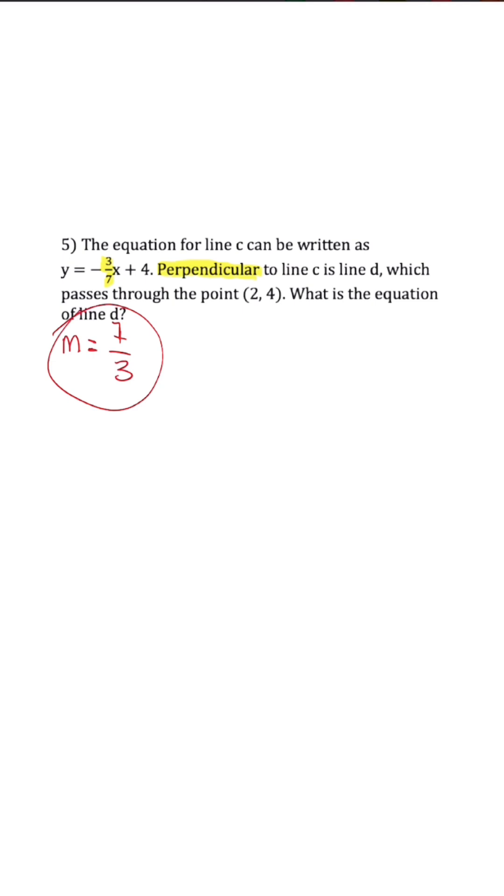So that's the slope we're going to substitute into the point-slope formula. Now that we have this, we just need to substitute and we're going to use (2, 4) as our point.